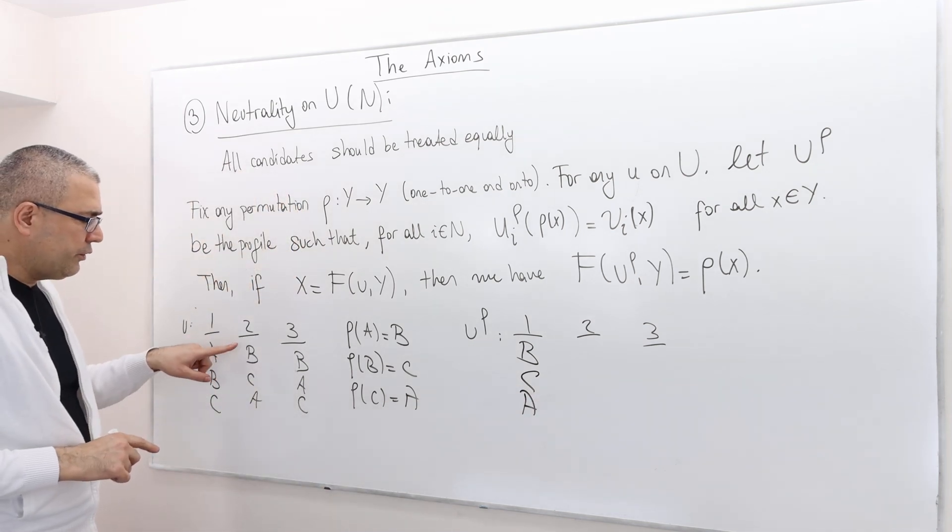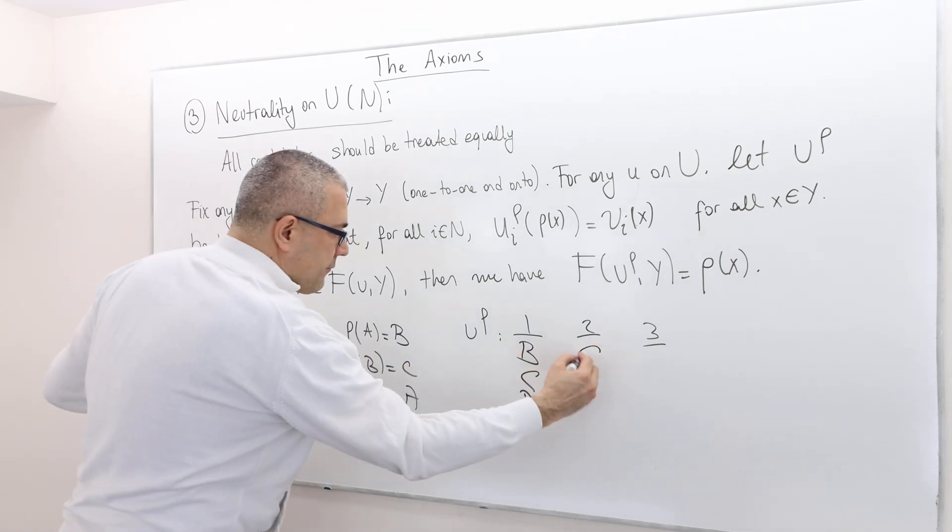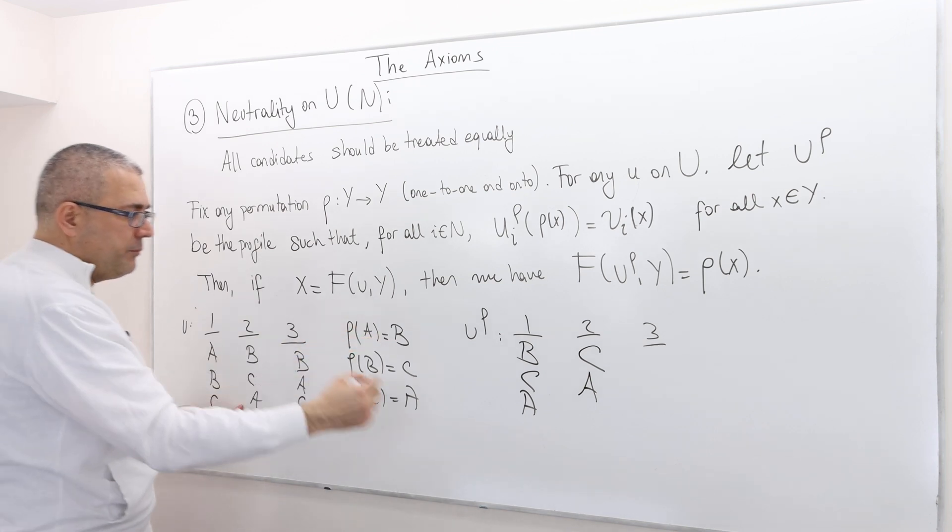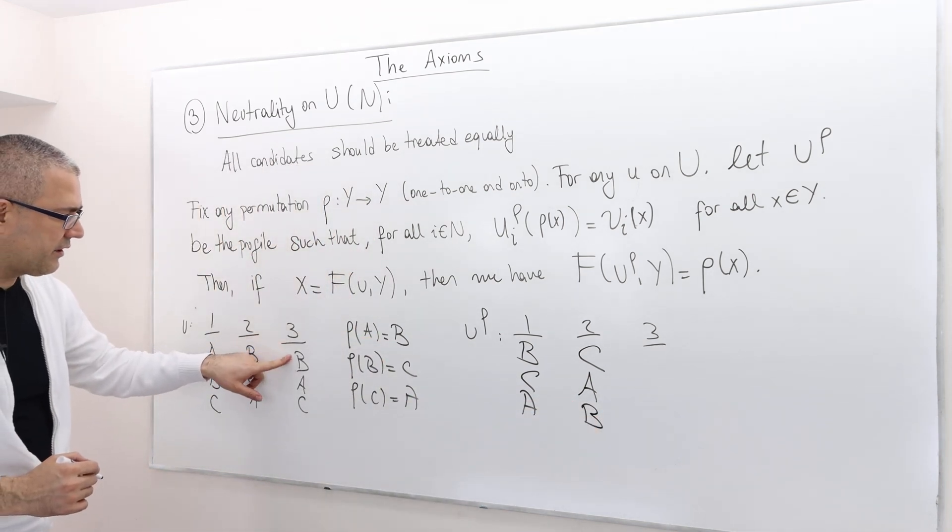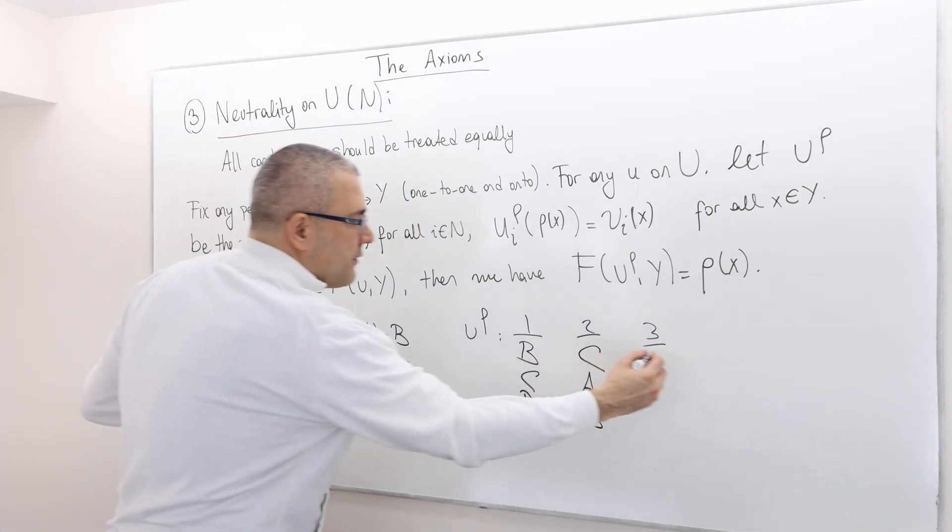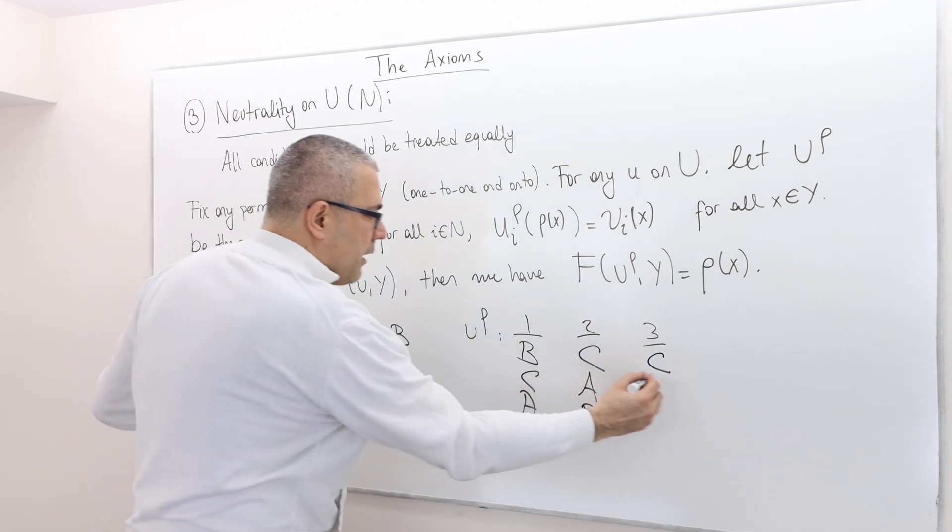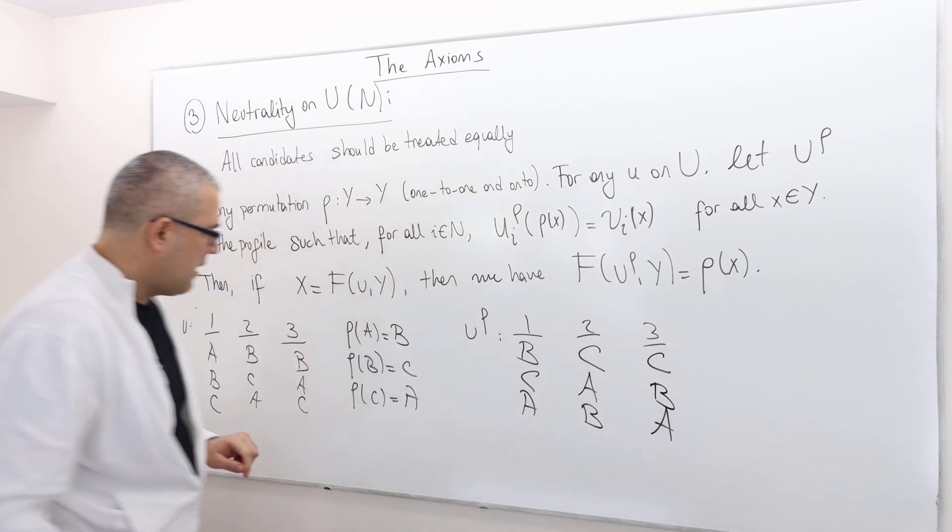Agent 2 used to prefer B to C, but B is C, and C is A, and then A is B. And what's agent 3? Agent 3 says B, but B is now called C, A is now called B, and then C is now called A.